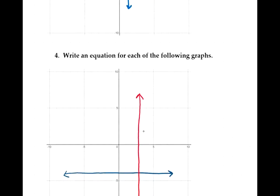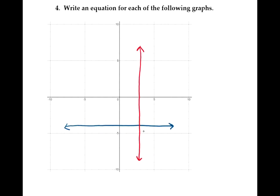In number 4, it's the opposite — we have graphs of a vertical and a horizontal line and need the equations. A vertical line crosses the x-axis, so its equation is x equals a number. Here the line crosses the x-axis at 3, so the equation is x equals 3. The horizontal line has equation y equals a number; this line is 4 units below the x-axis, so the equation is y equals negative 4.